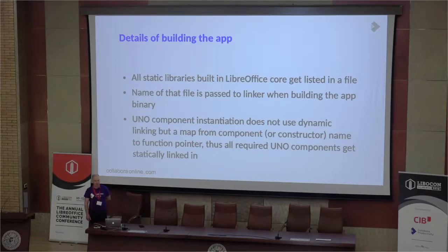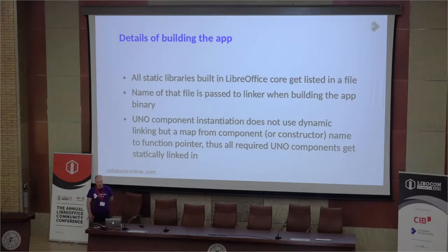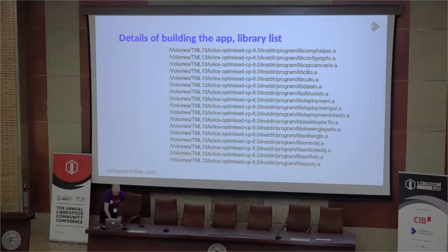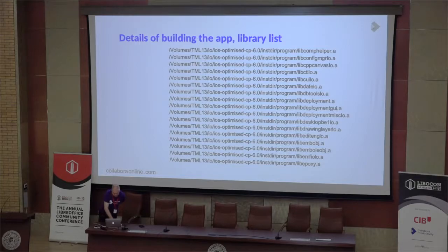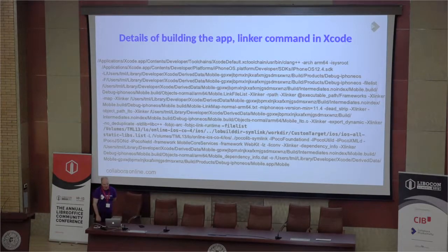When you build the core LibreOffice, all these static libraries are put in a file or a list of their names, and that is then used by linking the app in Xcode. As we don't do any dynamic linking, all the mapping from a UNO component name or constructor name to actual code has to be through a static map. Here is how the file list or list of these libraries looks — a part of it. And here is the link command line that Xcode generates. The thing in bold in the middle is the file list that is passed to it.